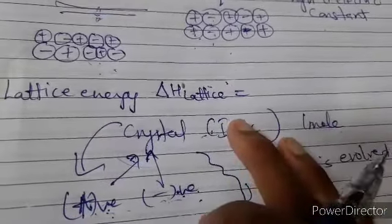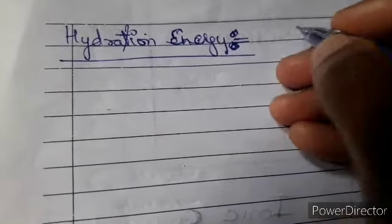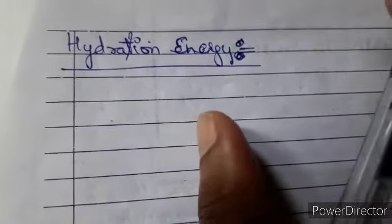Now, hydration energy: hydration energy also has a negative value and is an enthalpy change. It is the energy involved in the hydration of one mole of gaseous ions of each type in an ionic solid. A definite amount of heat energy is involved when a gaseous ion is hydrated. Importantly, the smaller the size of the ion, the greater the hydration energy.